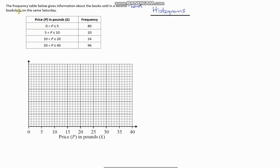If we look at this information, the frequency table below gives information about the books sold in a second-hand bookshop on the same Saturday. Here we've got the amount spent in the shop and here we've got the frequency. So this is the total number of people. For example, 80 people spent between 0 and 5 pounds, 20 people spent between 5 and 10 pounds, 24 people spent between 10 and 20 pounds, and 96 people spent between 20 and 40 pounds.